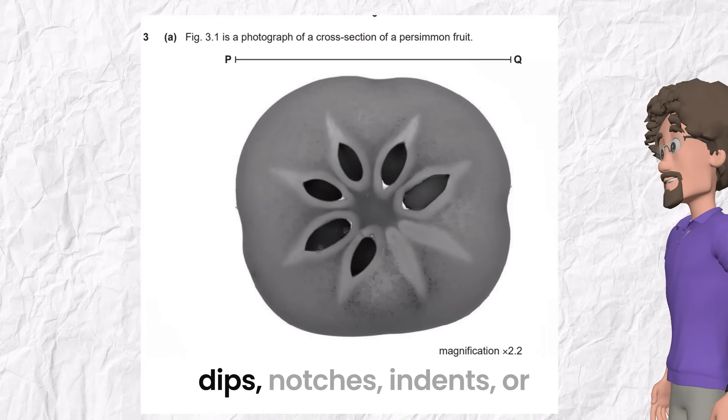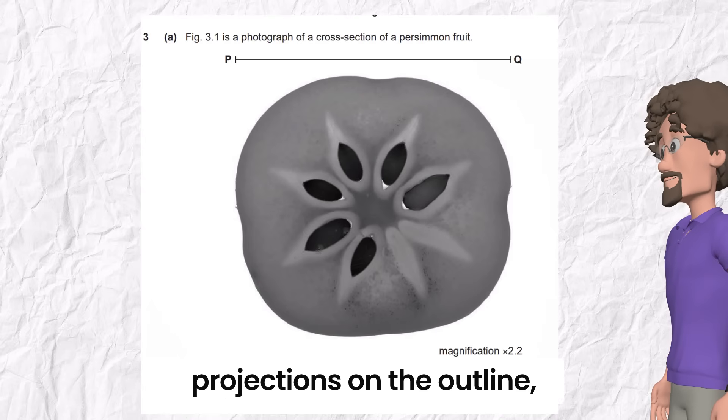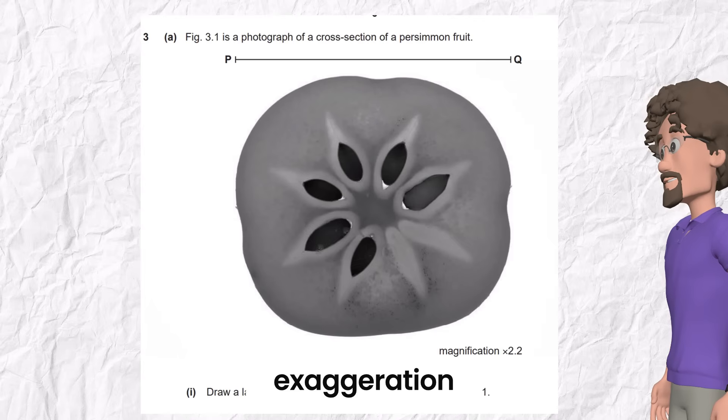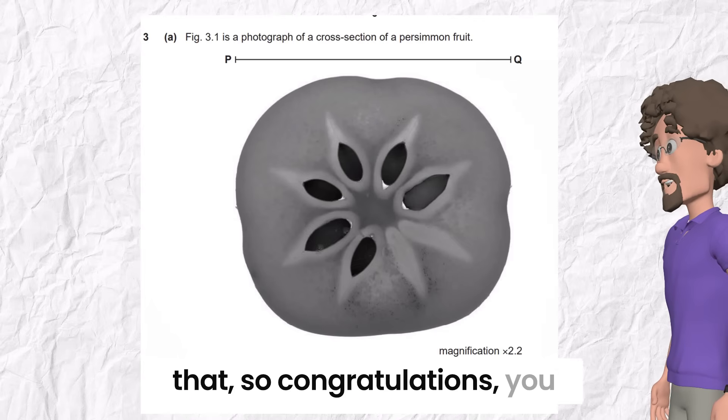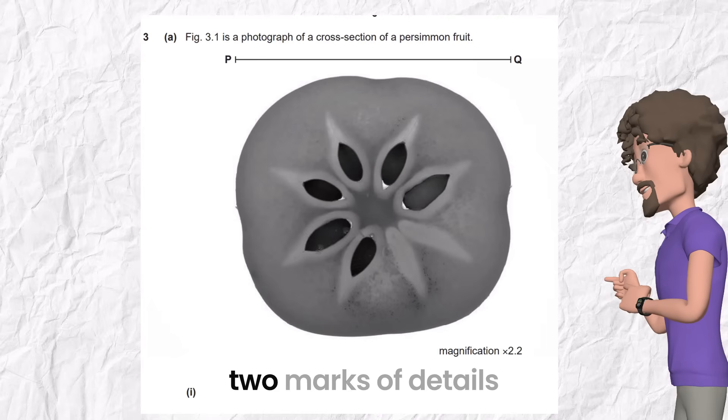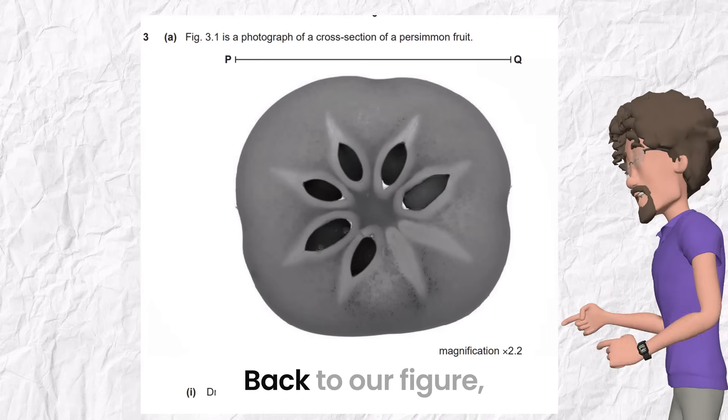So search first for dips, notches, indents, or projections on the outline. And draw it without exaggeration. Mainly if you catch that, so congratulations, you get one of the two marks of details.